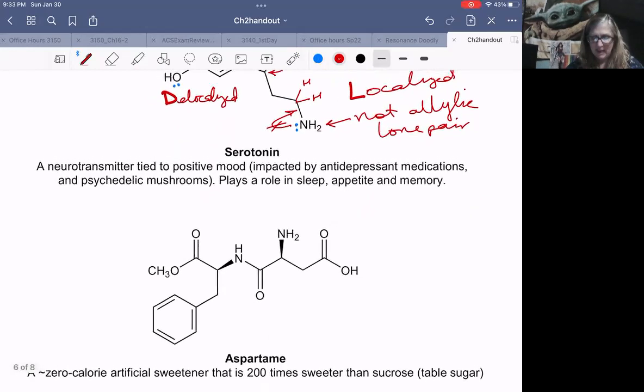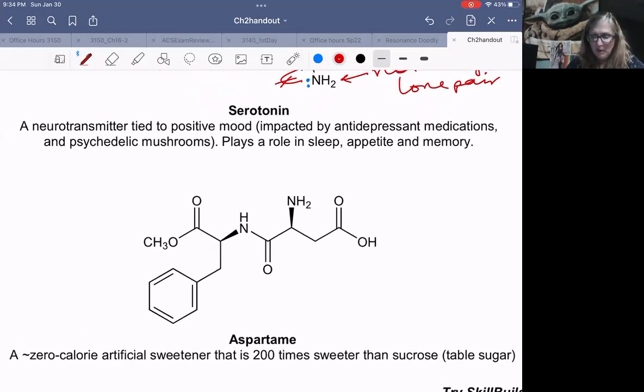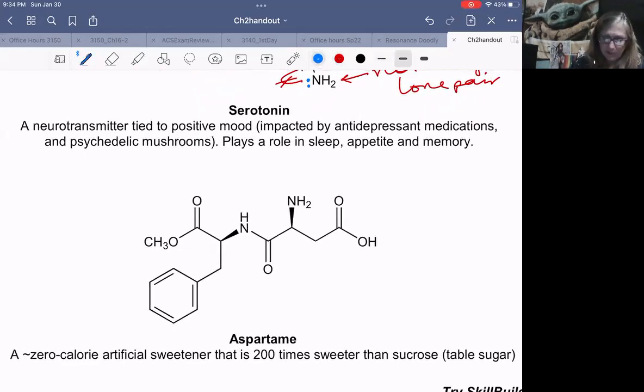One more example. This is aspartame. Aspartame goes by the brand name NutraSweet. This is a sweetener that's 200 times or so sweeter than sucrose, table sugar. So this is super sweet, but it's essentially no calories. So it's used as an artificial sweetener. Lots of lone pairs here. Every oxygen, neutral oxygen has two lone pairs. Every neutral nitrogen has a lone pair as well.